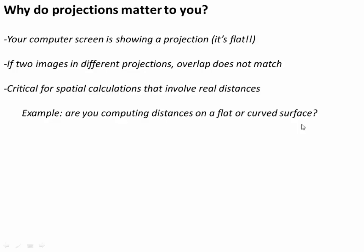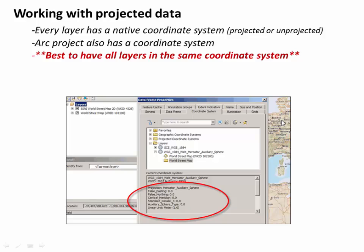A little advice about ArcMap: every layer you load has some native coordinate system — sometimes already projected, sometimes unprojected. The ArcMap project itself also has a coordinate system, usually taken from the first data layer you load. It's very important that all layers have the same coordinate system in your project. It may not matter much for display, but it matters a lot if you're doing calculations extracting values or computing areas.